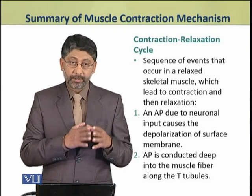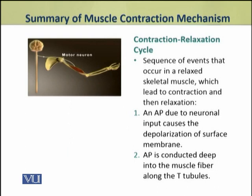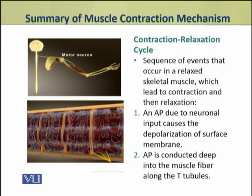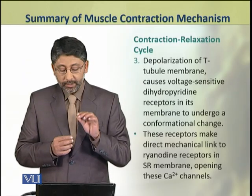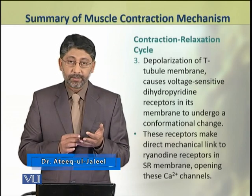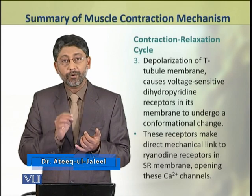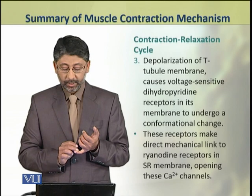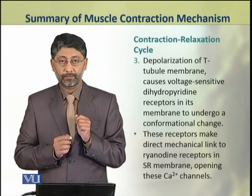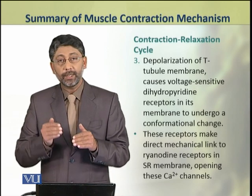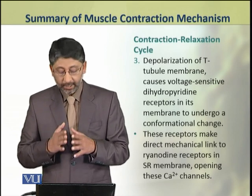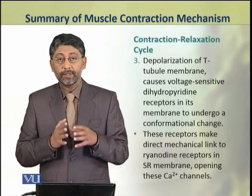The whole process starts when an action potential arrives at the neuromuscular junction and causes the depolarization of the surface membrane. The action potential is then conducted deep into the muscle fiber along the T-tubules. The depolarization of T-tubules causes voltage-sensitive dihydropyridine receptors in these T-tubules to undergo a conformational change. These receptors make mechanical links to the ryanodine receptors in the membrane of sarcoplasmic reticulum and cause the opening of these calcium channels.